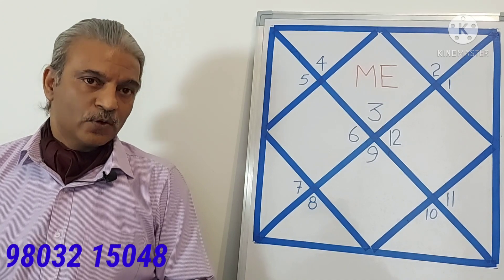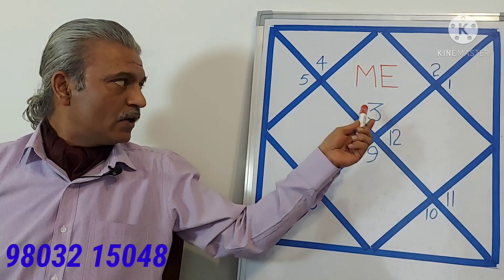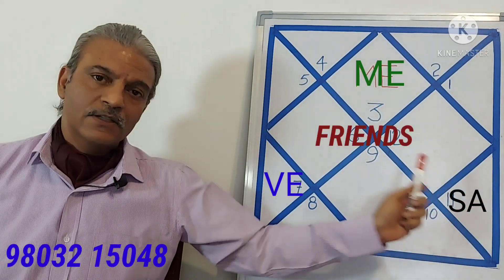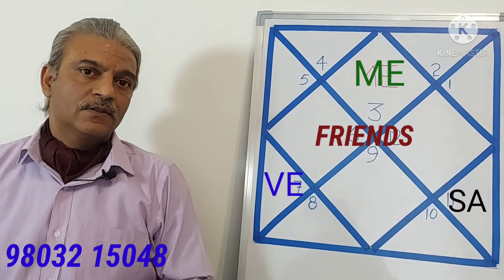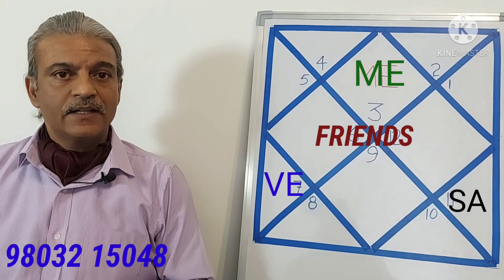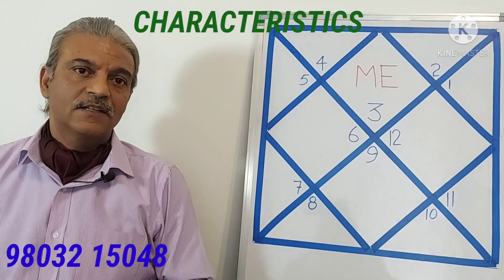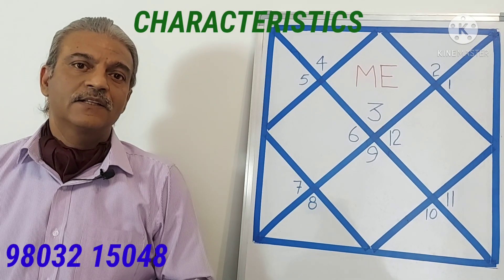In a Gemini Ascendant horoscope, the first Lord is Mercury, the fifth Lord is Venus and the ninth Lord is Saturn. These three Lords, that is Mercury, Venus and Saturn will always be friends of each other and they will support each other.